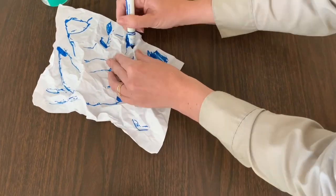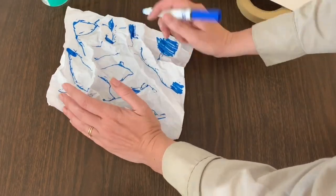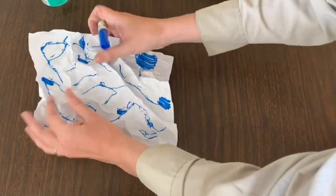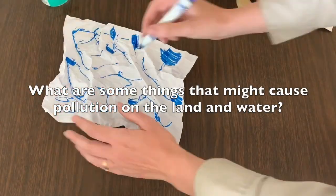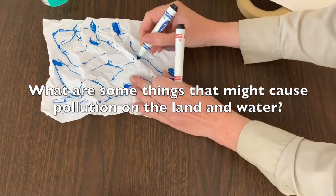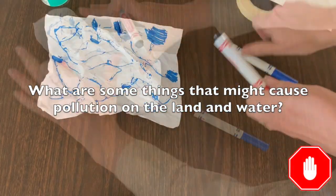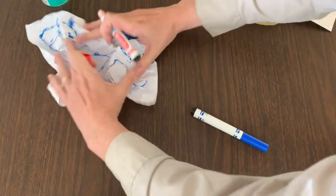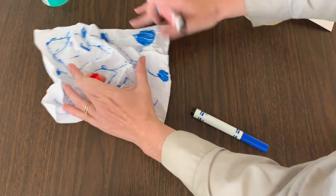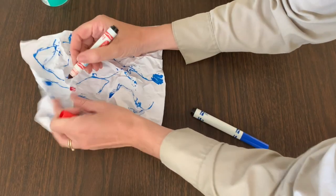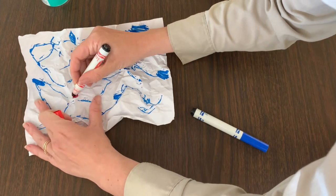Now that we've created our watershed on the land and shown where the water flows, what are some things that humans do that might change or hurt the watershed? What are some things that might cause pollution? For each different thing we think of,